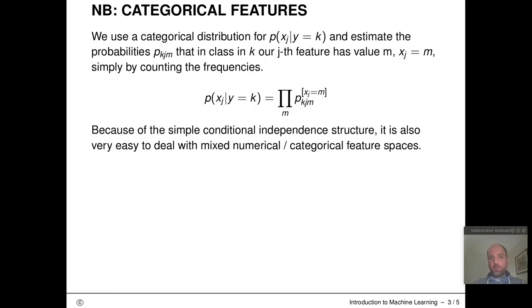How would this work for categorical features? For categorical features, we just use a categorical distribution. Assuming we have three different categories for the feature, not for the class but for the feature, we just count frequencies. We count the frequency that given we're in the kth class, we count the frequency that our jth feature is of value m. We count up all these frequencies, put them into the regular formula of a categorical distribution, and this is now our density for our feature xj. Then the same thing happens again through multiplication.